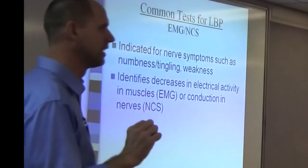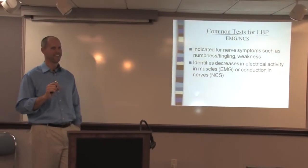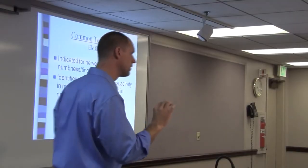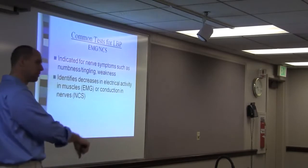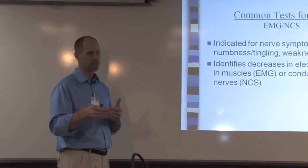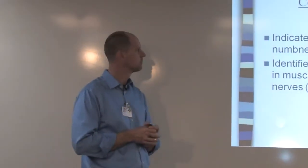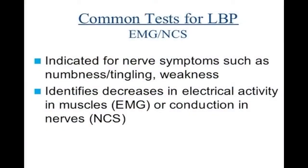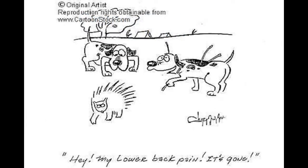In a nerve conduction study, if there's somewhere along the nerve path where messages are being blocked by compression, they put a probe at one end and a probe at the other, send a shock down the leg or arm, and measure how quickly it travels from one point to the other — comparing that to normal values. The EMG is used if there's a suspected neurological condition affecting the muscles themselves, leading to weakness. Those are some of the more common tests, though there are others.